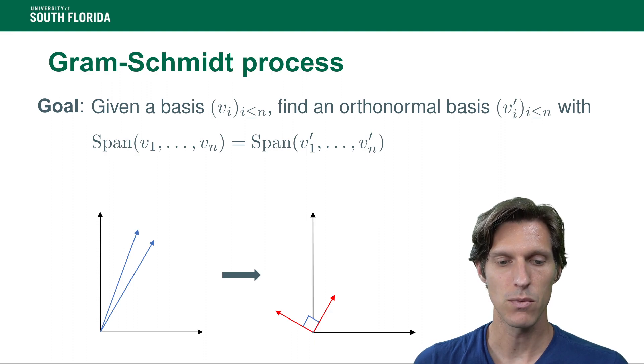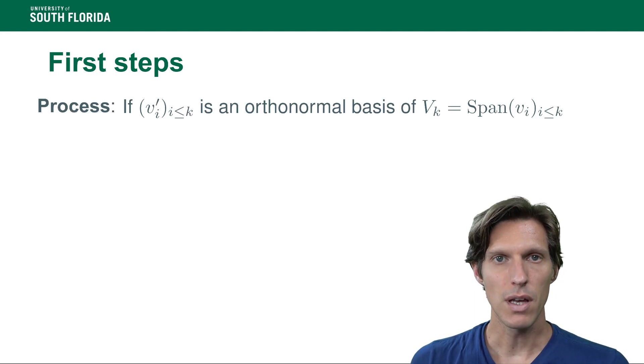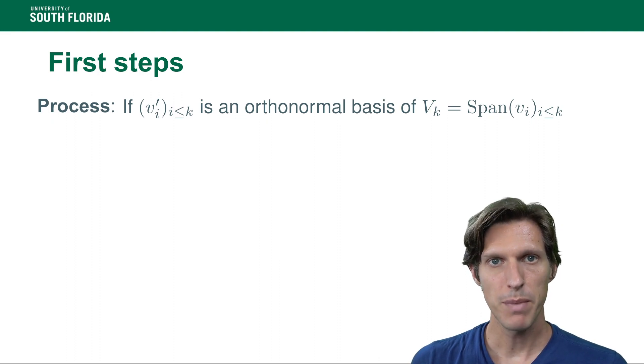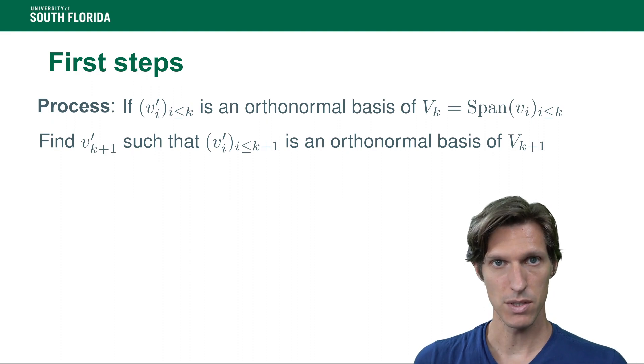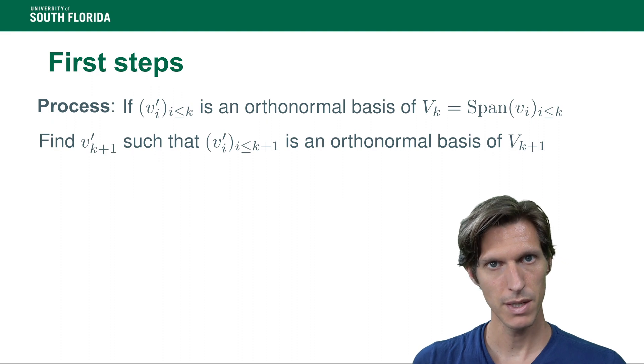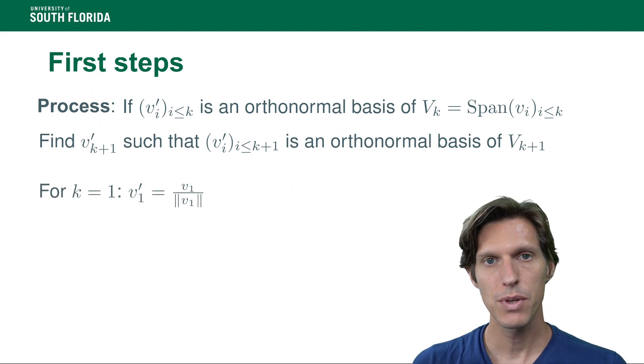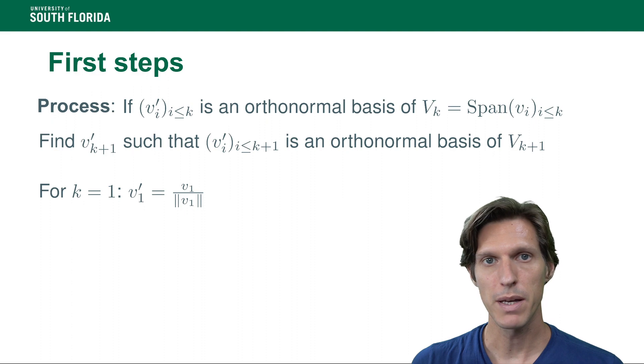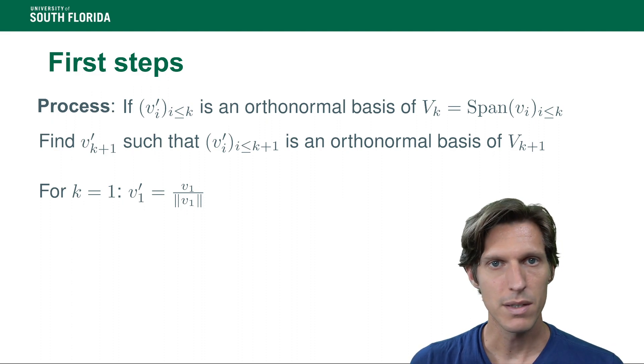So the first steps. The whole process is an iterative process. We assume that we've found an orthonormal basis v'₁ to v'ₖ of the span of v₁...vₖ, and we're looking for the next vector v'ₖ₊₁ such that the span of v'₁ to v'ₖ₊₁ is the same as the span of v₁ to vₖ₊₁. For k equals 1, it's pretty easy. All you have to do is scale v₁ by its norm to get a norm 1 vector, and it will span that one-dimensional vector space. It will be orthonormal because it doesn't have any other vector to be orthogonal to.